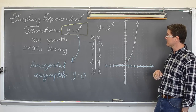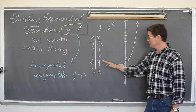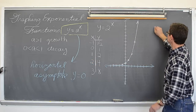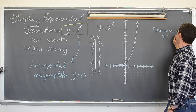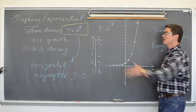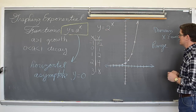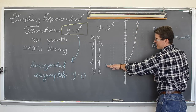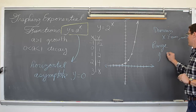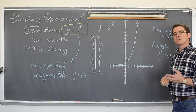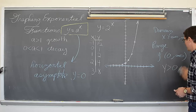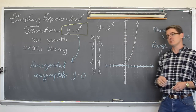The domain is going to be all real numbers — negative infinity to positive infinity. The range of your basic exponential function y equals a to the x: the lowest y value this graph includes is approaching zero but never reaching it. So the range is zero to positive infinity — in interval notation, open at zero. If this were an inequality, it would be y is greater than zero for the range.